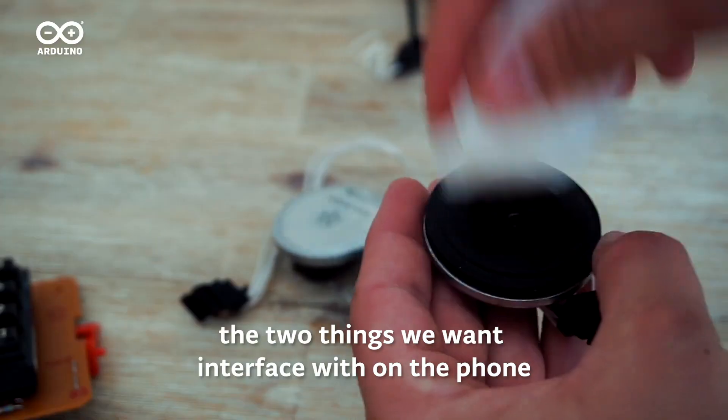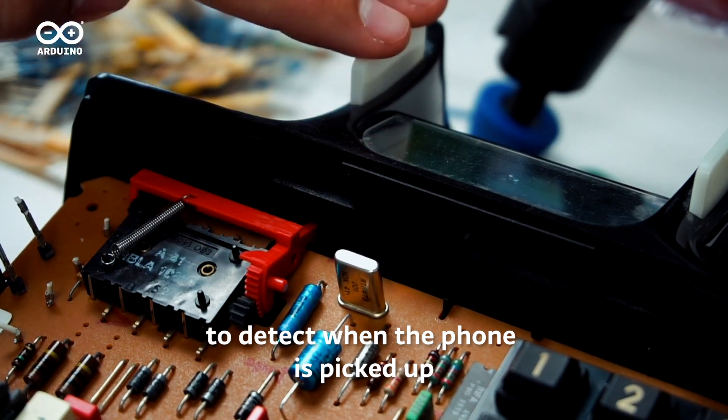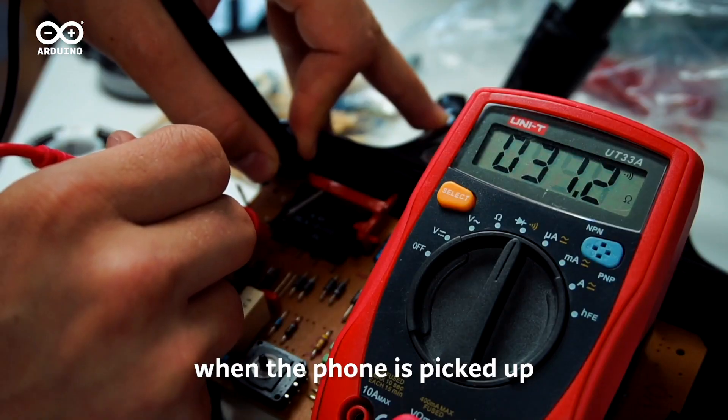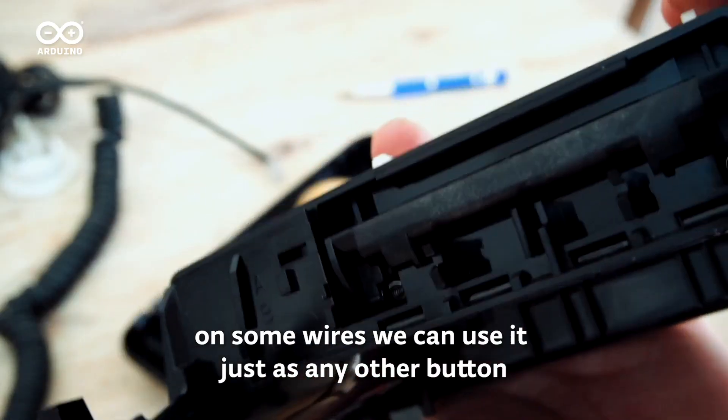The two things we want to interface with on the phone is the speaker and the ability to detect when the phone is being picked up. When the phone is picked up two pins here will connect and by soldering on some wires we can use it just as any other button.